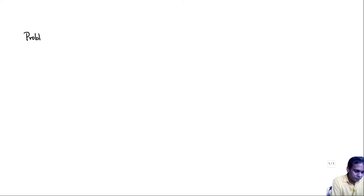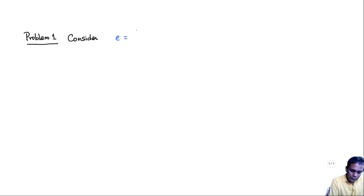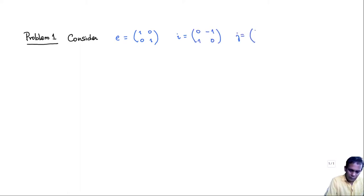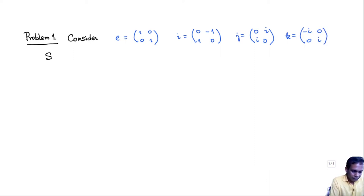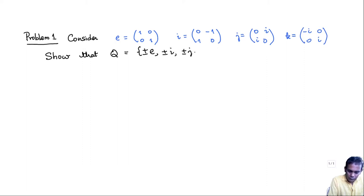Here is problem one. Consider the matrices: E equals the 2×2 identity matrix, I equals the matrix [0, -1; 1, 0], J equals [0, i; i, 0], and K equals [-i, 0; 0, i]. The problem is to show that Q equals {±E, ±I, ±J, ±K} is a group under matrix multiplication.